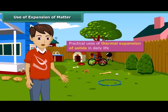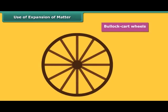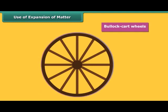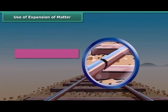Let us look at some practical uses of thermal expansion of solids in daily life. The iron rim is fitted onto wooden wheels by heating. When the metal cools, it holds the segments of the wooden wheel firmly. A small gap is left between the rails of a railway track where two rails are joined with the help of a fish plate. This gap allows space for the expansion of rails in summer.